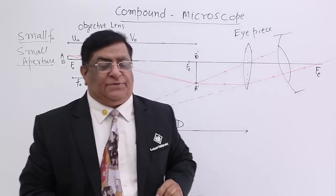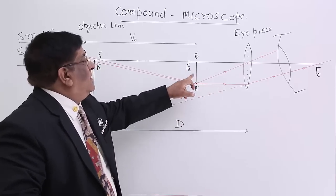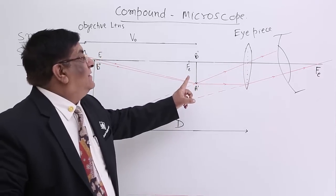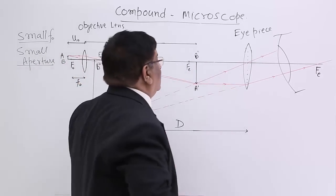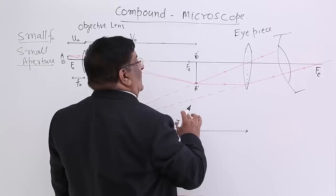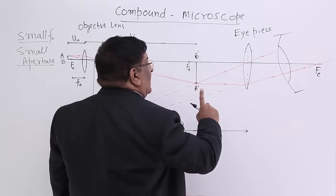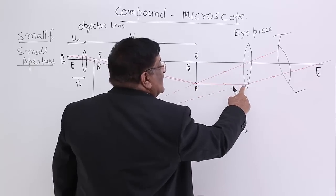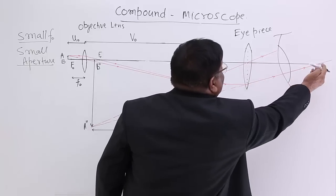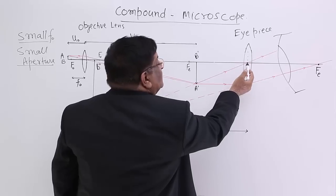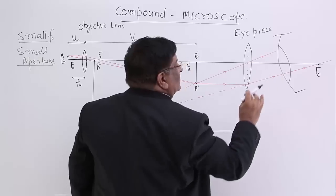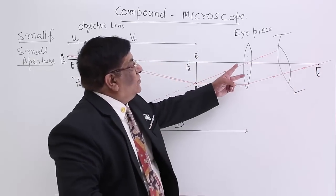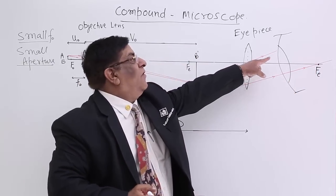This image now acts as the object for the second lens — the eyepiece. From this object we take two rays. One going through the optical center will go undeviated. The other going parallel to the principal axis will go through the focus of the eyepiece. These two rays are diverging; they don't meet, so they don't form any real image on this side.